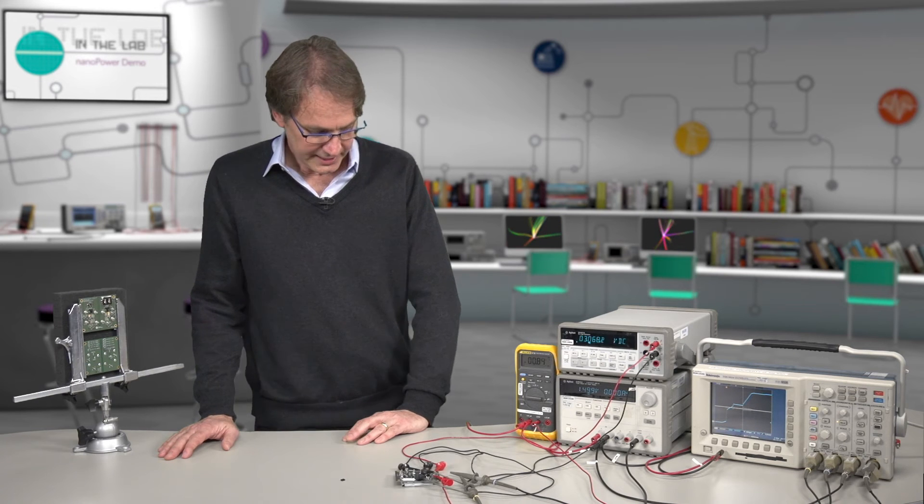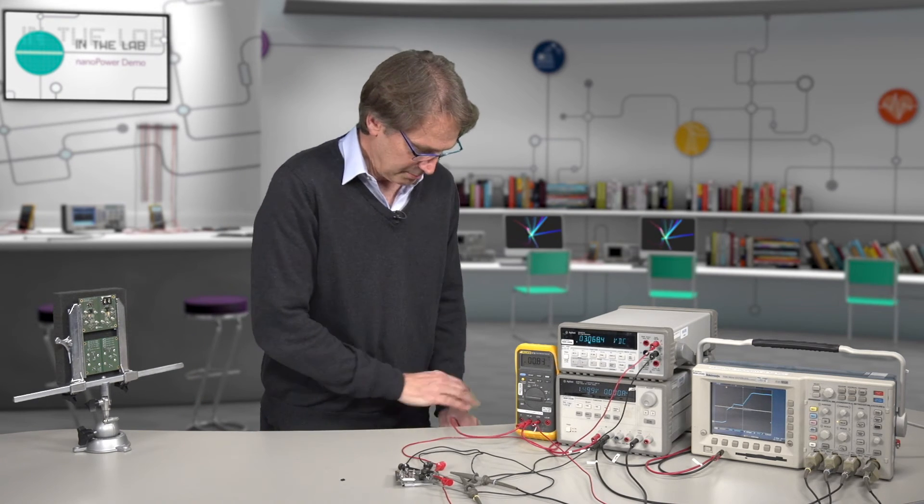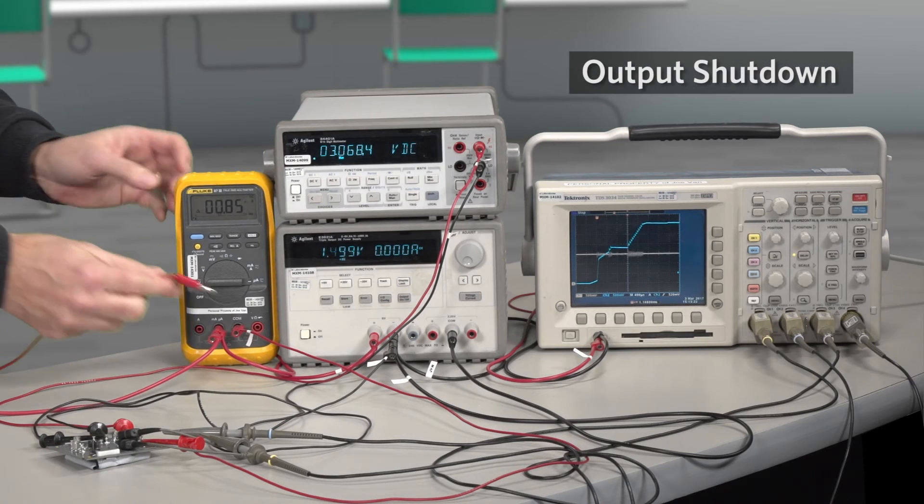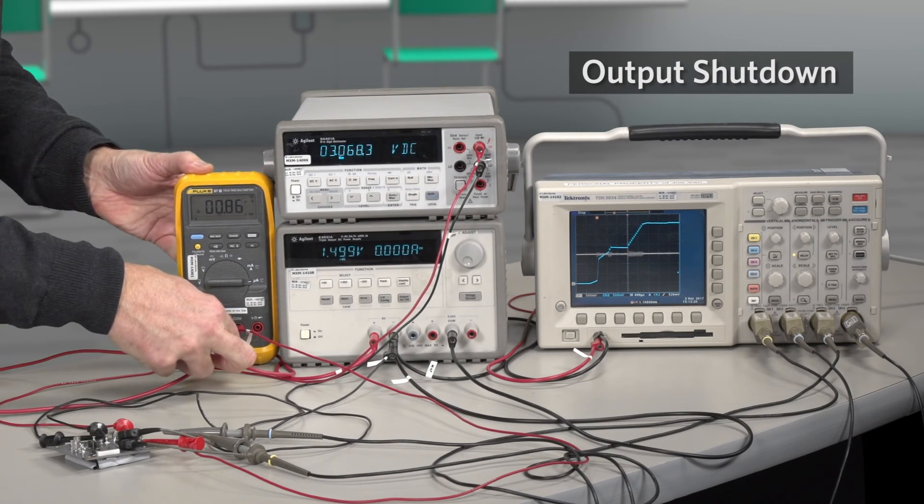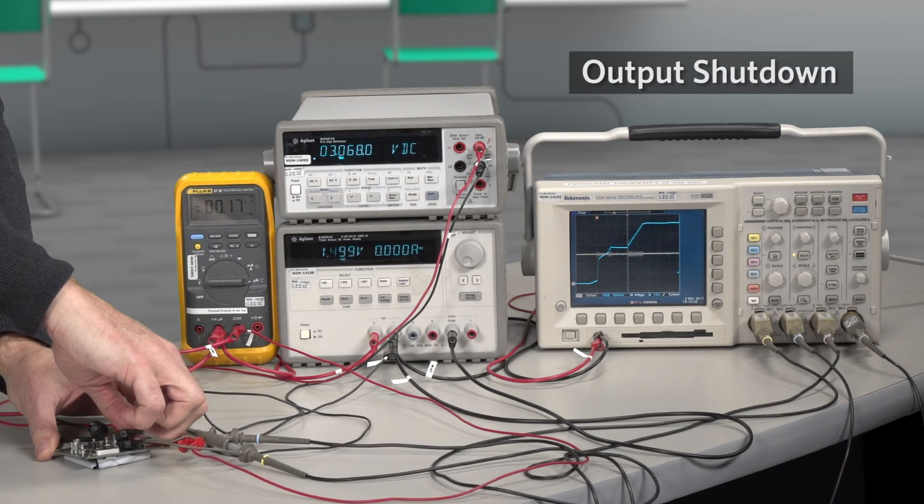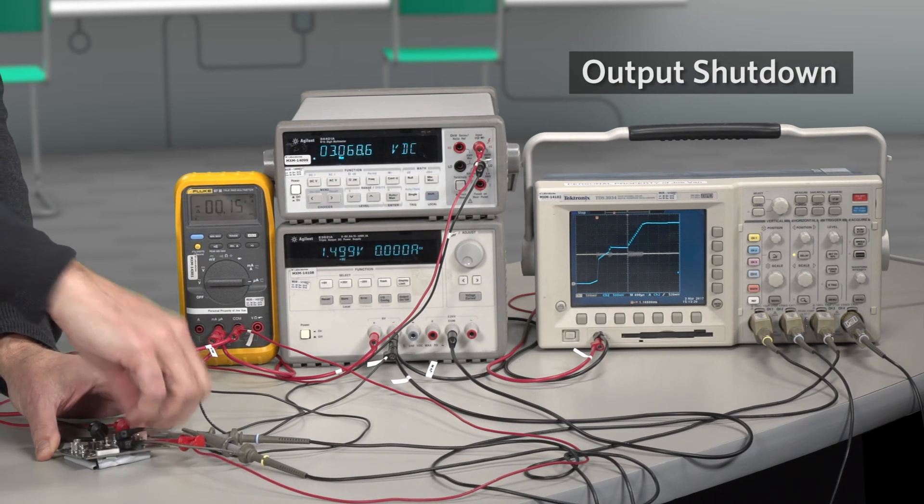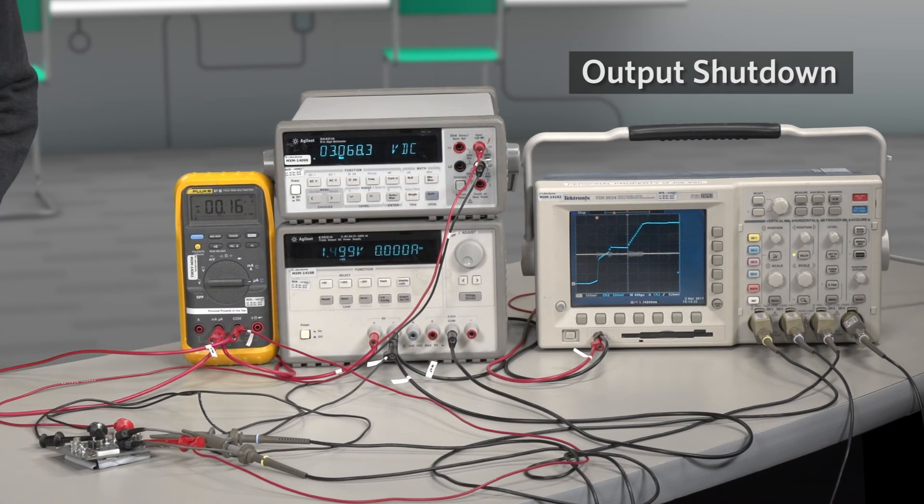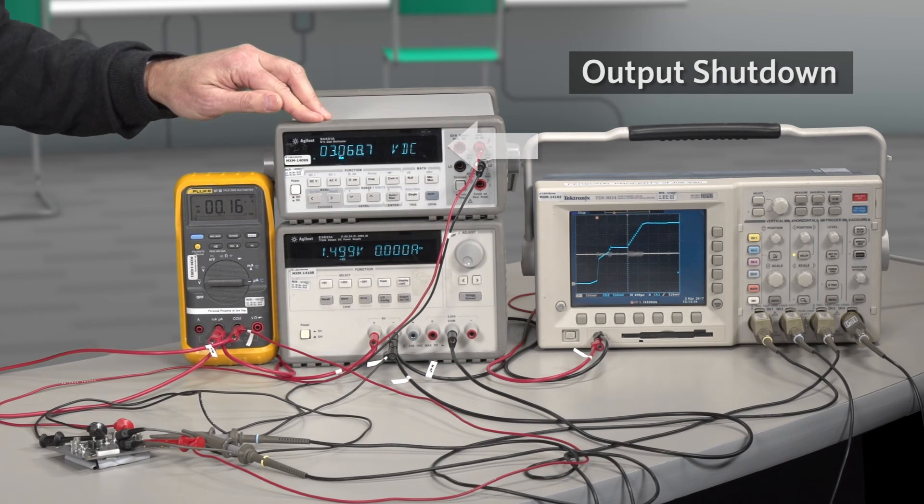Now let's go ahead and look at the output as it shuts down. I'm going to go ahead and short out the meter again. When I take the output and I disable it, you'll notice that the output is still at 3 volts.